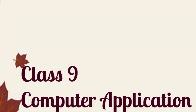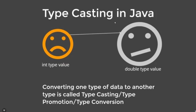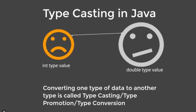Good morning students of class 9. In this part of the video we will discuss typecasting in programming language. Whenever we create a program we have to store lots of data, so we use variables. It can be primitive or non-primitive data type variable. Sometimes we have to convert one type of variable to another type of variable. This process is called typecasting — converting one type of data to another type is called typecasting, type promotion, or type conversion.